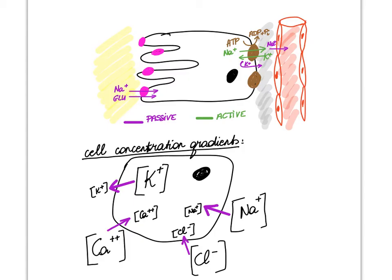First, let's refresh our memory on cell concentration gradients. If we look at any cell in the body, the concentration of potassium is always much higher on the inside of the cell compared to the outside, so potassium likes to leak out. Sodium has the opposite gradient — the concentration of sodium outside cells is always higher than inside, so sodium likes to leak in. Purple refers to passive transport. You should also know the concentration gradients for calcium and chloride.